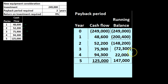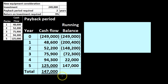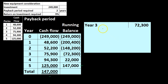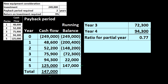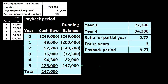Now we know within which year it happens, but we can get more detail to be more precise. We can take our information — the total cash flows and the running balance, noting that the running balance at the end equals the sum of total cash flows. At the end of year three we had $72,300 still not paid off. If we divide that by the $94,300 that happened in year four, we get the percentage of the year it was paid off — 0.77. Adding three years to that gives us 3.77 years.